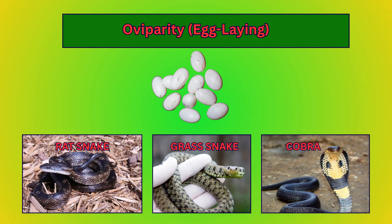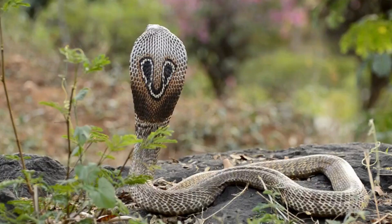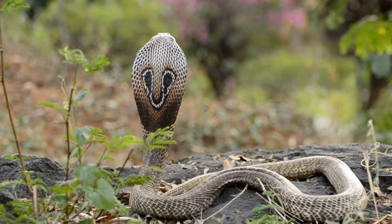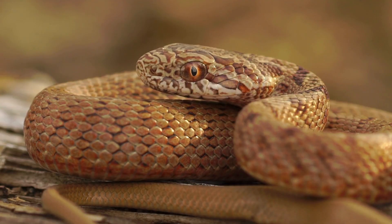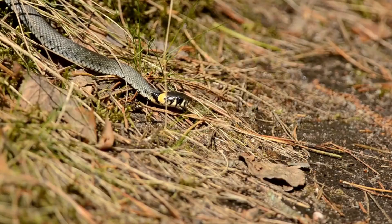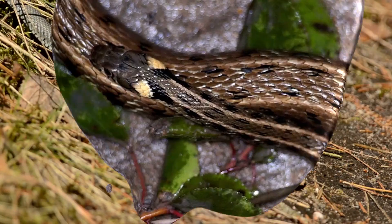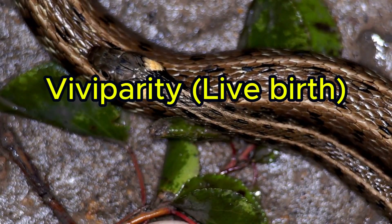Most snakes are oviparous — they lay eggs outside their body. Common egg-layers include king cobras, rat snakes, and grass snakes.